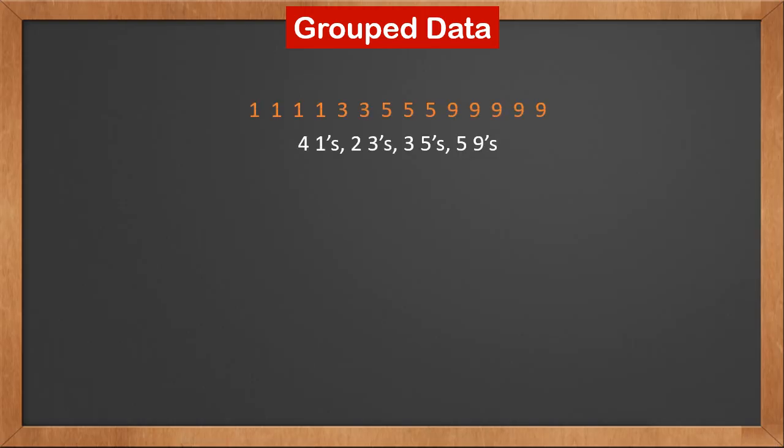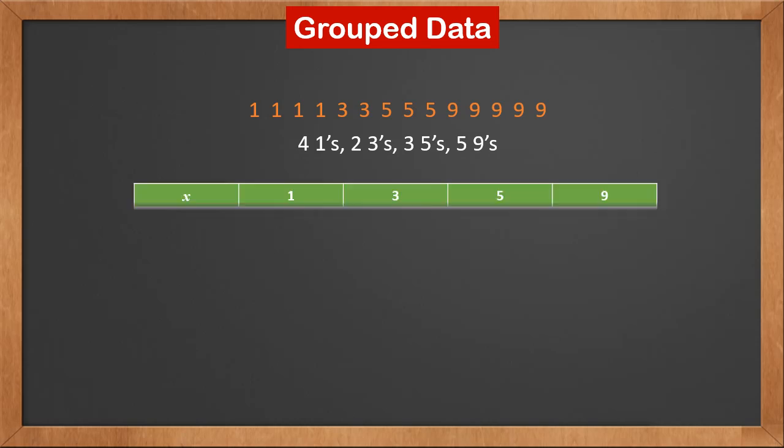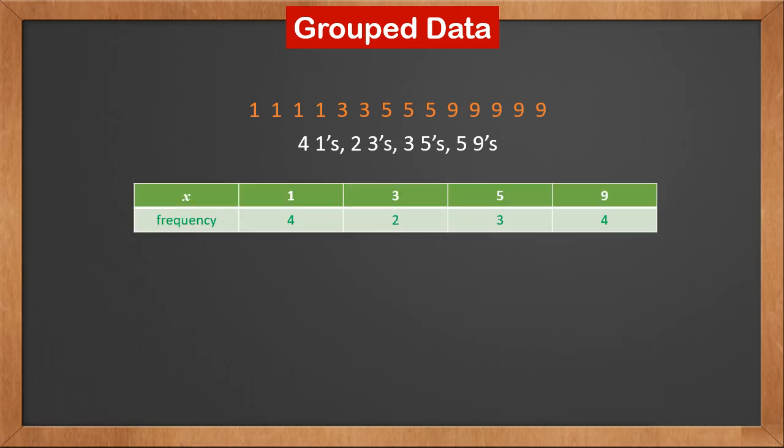Let's look at this dataset. We can see that there are 4 ones, 2 threes, 3 fives, and 5 nines. For this kind of dataset with repeated values, we usually put it in a table and group values together.